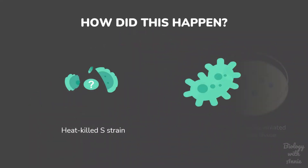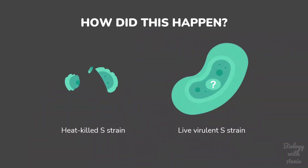Based on these observations, Griffith hypothesized that some chemical component from the heat-killed S strain was able to transform the R strain into the live virulent S strain. Unfortunately, he was not able to identify what this chemical component was, and so it was called the transforming principle.